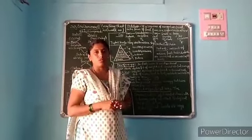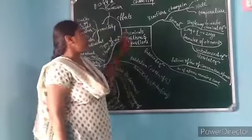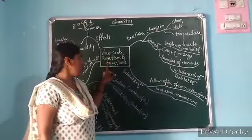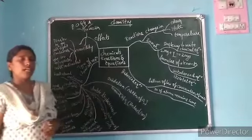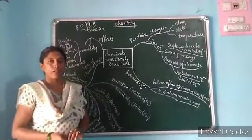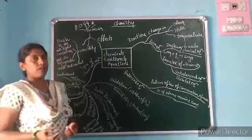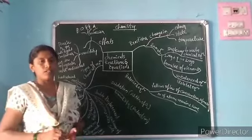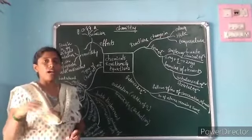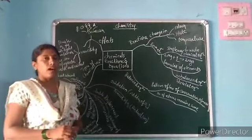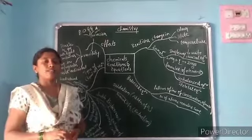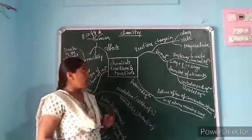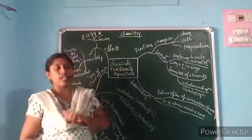Welcome to chemistry class. This is a chemistry lesson: chemical reactions and equations. In our daily life many chemical reactions occur around us — for example, digestion, respiration, milk becoming curd, painting, and rusting of iron. In the laboratory we can study how chemical reactions happen.